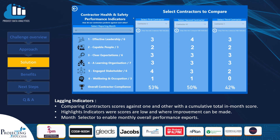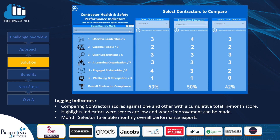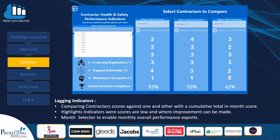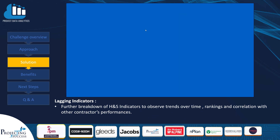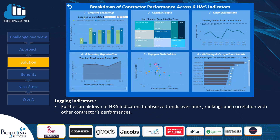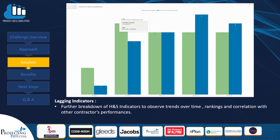The landing page of our Power BI report enables the user to select a reporting month and compare up to three contractor performances across the six health and safety categories. A contractor's overall in-month percentage score is then displayed. The user can see where scoring categories or specific contractors are lagging, in order to implement improvement plans and drive improved health and safety on site. The user can then drill down into a specific contractor's performance and observe how it has trended over time, as well as how it stacks up against others.